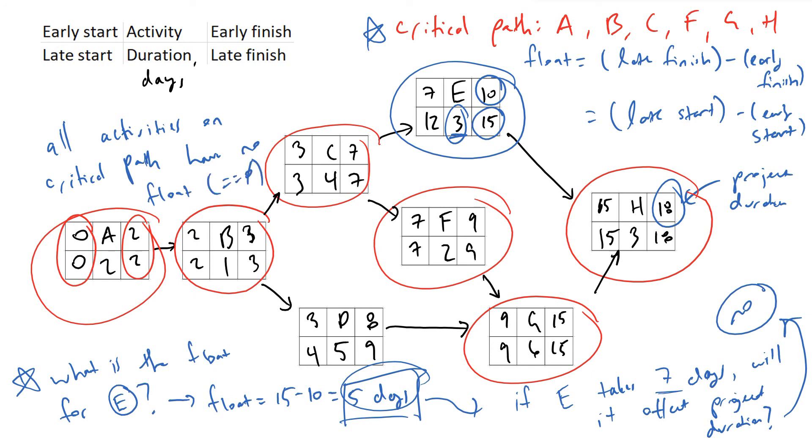So basically if any of these activities—A, B, C, F, G, or H—take longer than we anticipated, if A takes three days instead of two days, we're going to be adding a day to our project's deadline. That's the reason why we care so much about things that are on our critical path, because they're basically the bottleneck in our project.